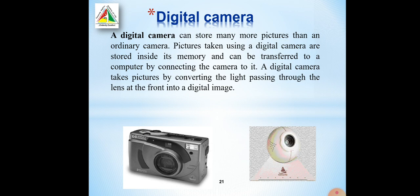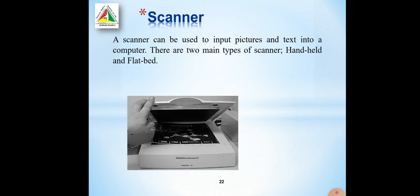The next input device is the digital camera. A digital camera can store many more pictures than any ordinary camera. Pictures taken using a digital camera are stored inside its memory and can be transferred to a computer by connecting the camera to it. A digital camera takes pictures by converting the light passing through the lens at the front into a digital image.